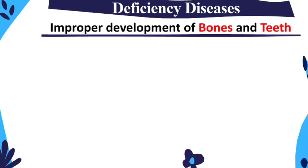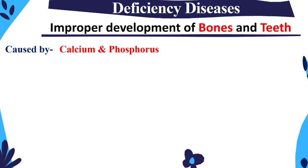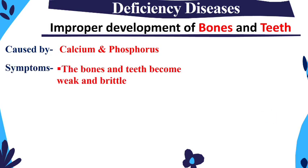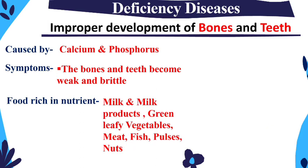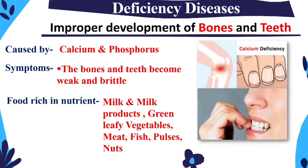Next is improper development of bones and teeth, caused by deficiency of calcium and phosphorus. This makes bones and teeth weak and brittle. To prevent this, consume milk and milk products, green leafy vegetables, fish, pulses, and nuts — as milk is a good source of calcium. Here you can see an image showing weak bones and teeth affected by this deficiency.